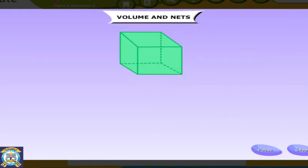Volume and Nets. In our previous classes we have learnt about a few solid shapes like cube, cuboid, cone, cylinder and sphere. We have also learnt about the number of faces, edges and vertices each solid shape has. Let us now learn how to find volume of a few solid shapes.